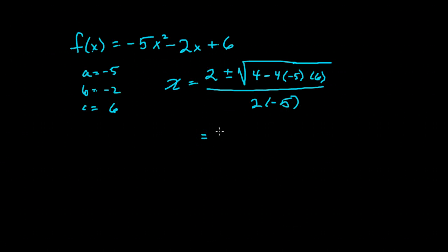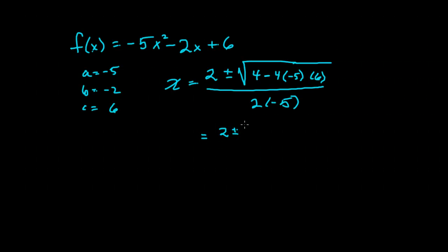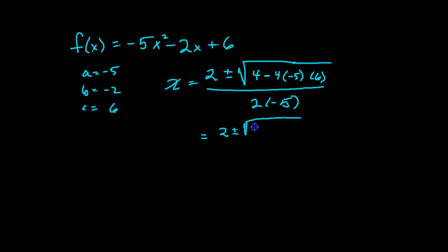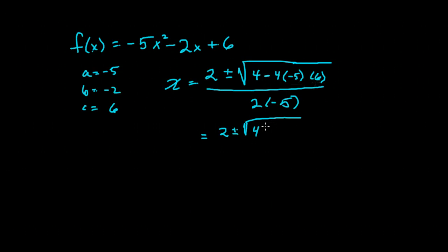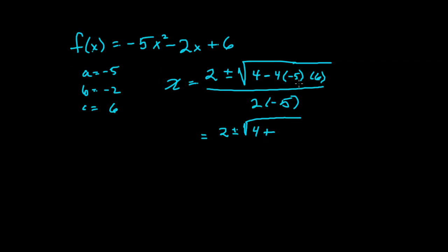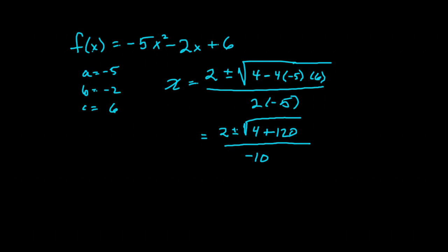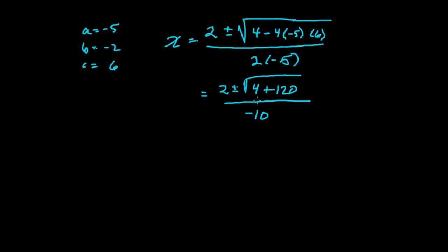That will simplify again underneath the radical first. So 2 plus or minus the square root of 4. Negative times a negative is a positive, times a positive gives me positive. 4 times 5 is 20, times 6 is 120. And all of that goes over a negative 10.